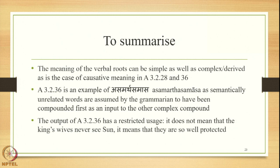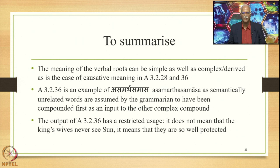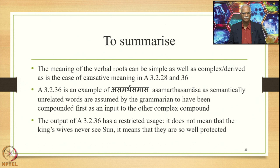To summarize: the meaning of the verbal roots can be simple as well as complex or derived, as is the case of causative meaning in 3.2.28 and 3.2.36. Sutra 3.2.36 is an example of an Asamartha Samasa, as semantically unrelated words are assumed by the grammarian to have been compounded first as an input to the other complex compound. The output of 3.2.36 has a restricted usage — it does not mean that the king's wives never see the sun; it means that they are so well protected. These are the texts referred to. We continue studying the Upapada Tatpurusha Samasa with some more suffixes stated in 3.2 in the coming lecture. Thank you for your patience.